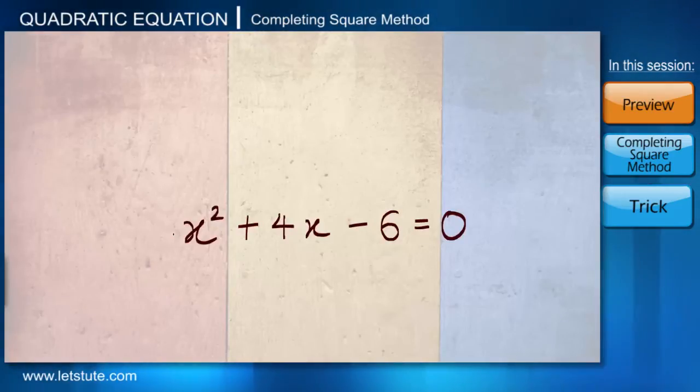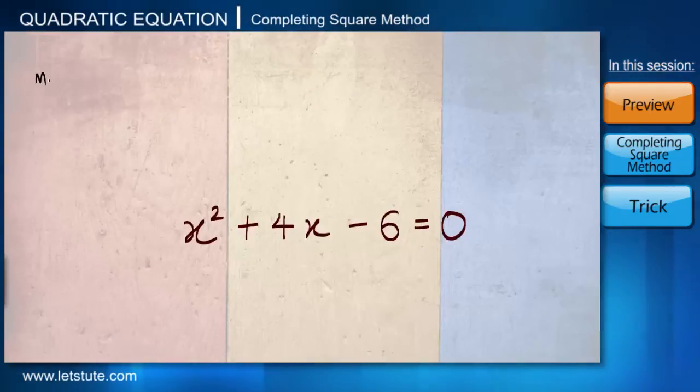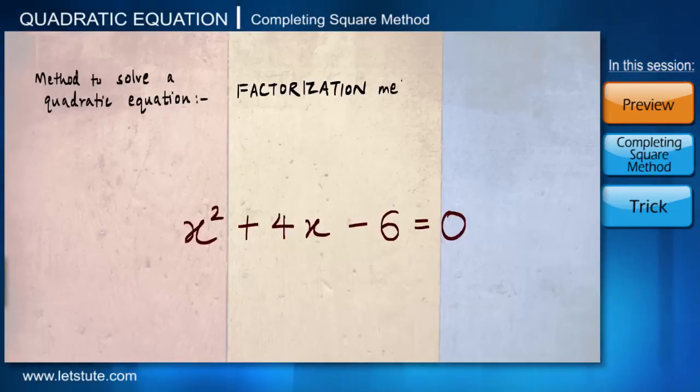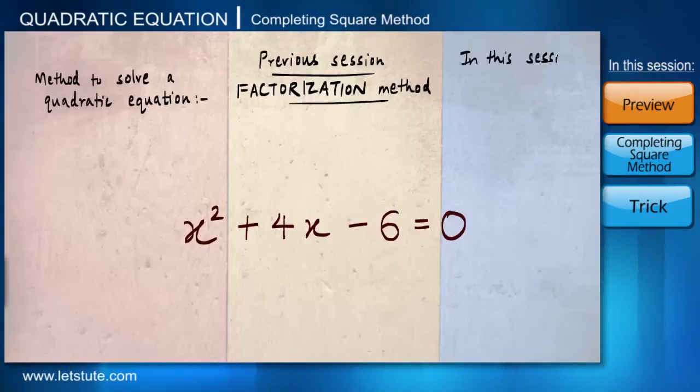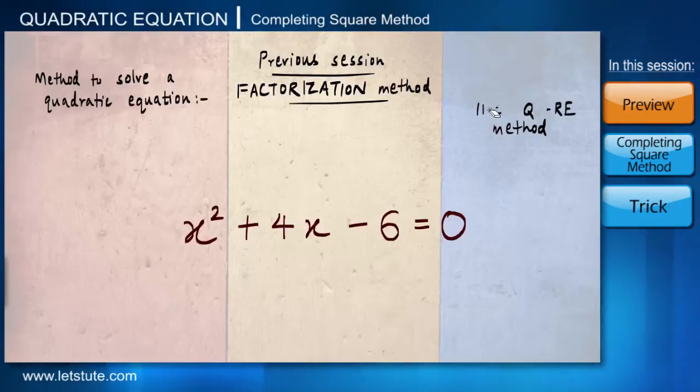If we have to solve this quadratic equation, which means solving for the value of the unknown variable x, we know till now just one method to solve it, called the factorization method, which we dealt with in our previous session. Now, in this session, we will solve this quadratic equation with a new method called completing the square method. But before that, let us see if this particular equation can be solved by factorization method or not.